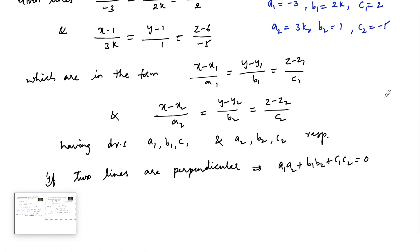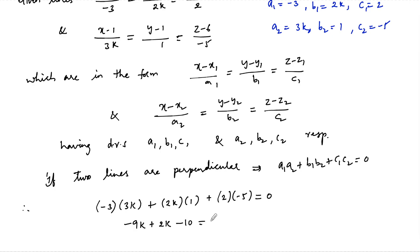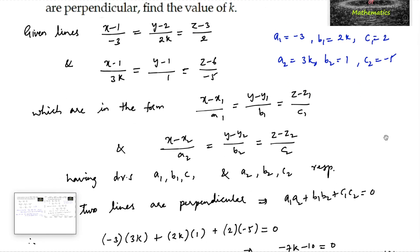Applying the perpendicularity condition: a1·a2 + b1·b2 + c1·c2 = 0, which gives (-3)(3k) + (2k)(1) + (2)(-5) = 0. That is, -9k + 2k - 10 = 0, which implies -7k - 10 = 0, or 7k = -10. Therefore, the value of k is -10/7.